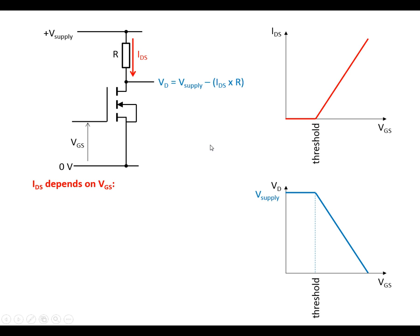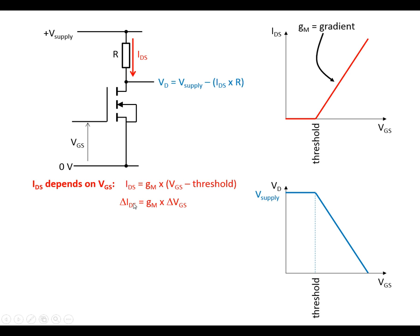Let's look at the dependence between the current and VGS and work out the gain for this. Looking at this graph, we've got a gradient called the transconductance of the MOSFET — it's just a characteristic of the MOSFET, as is the threshold. We've got a formula from the characteristics video: the change in current is equal to transconductance times the change in gate-source voltage. This is just telling us about the gradient of this part of the graph.